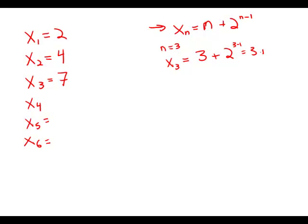Well, that's 3 plus 2 squared, 3 plus 4, which is 7. And that's exactly what they gave us for the third value. So this is how the formula works.